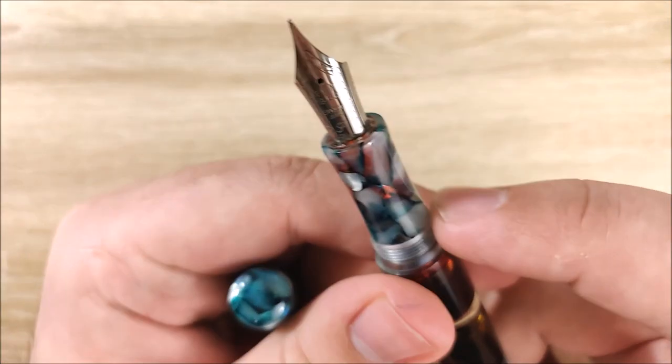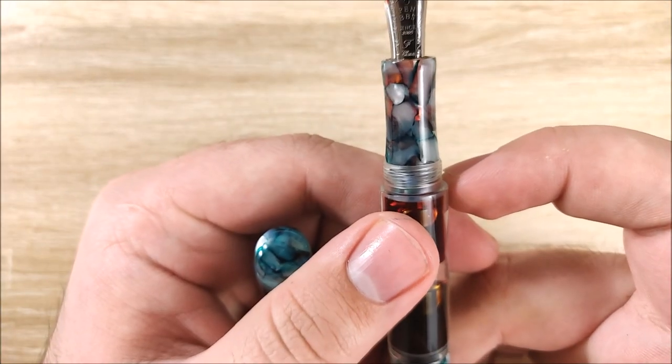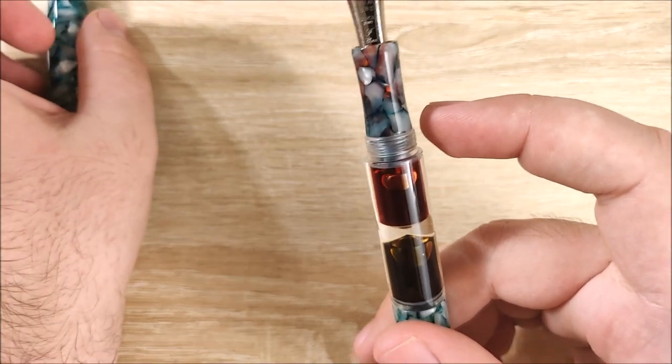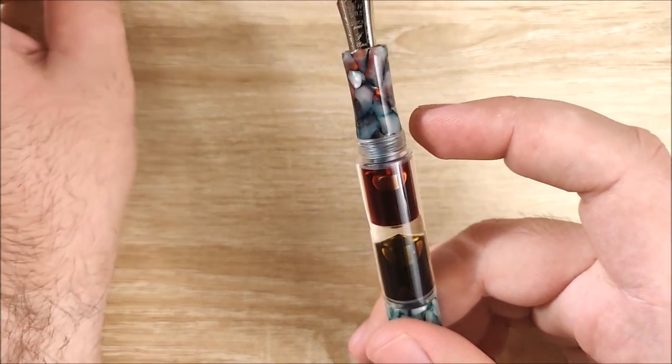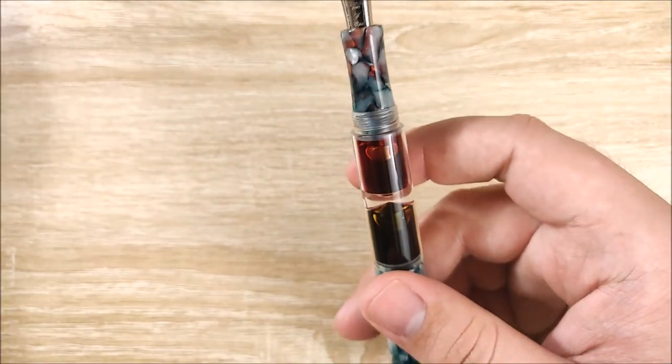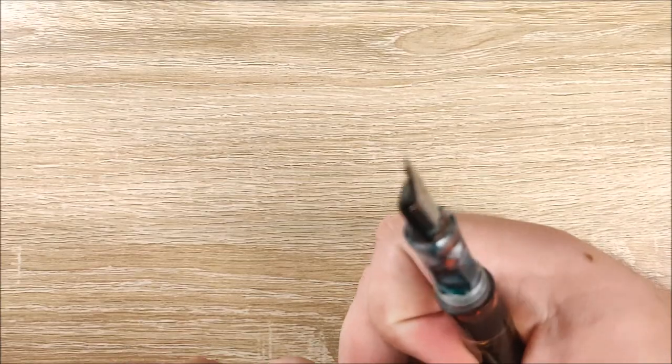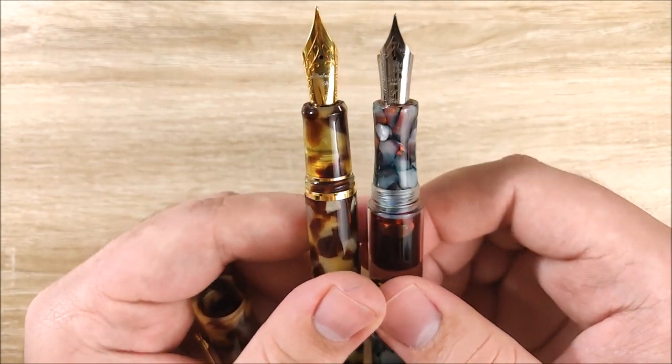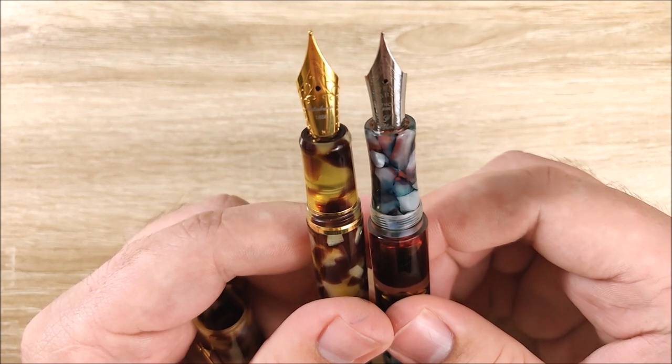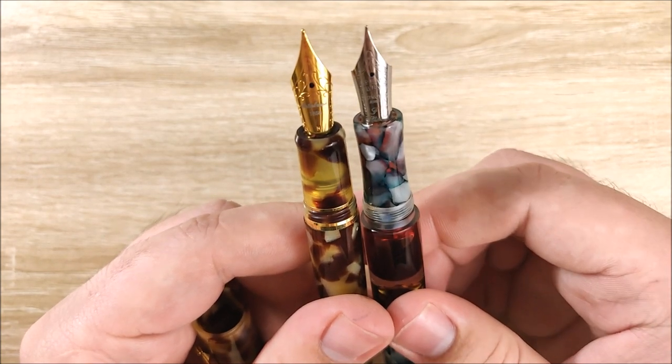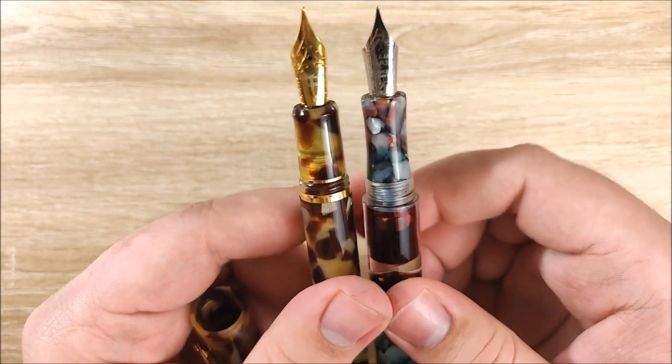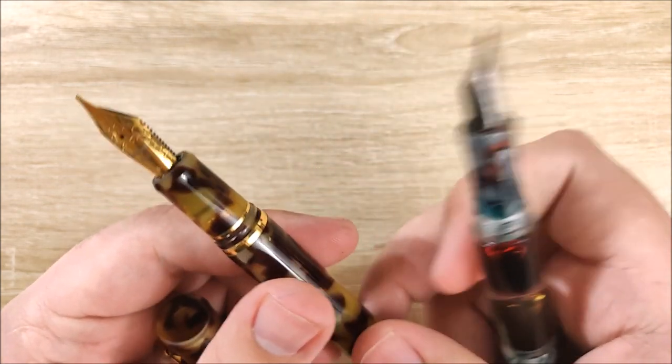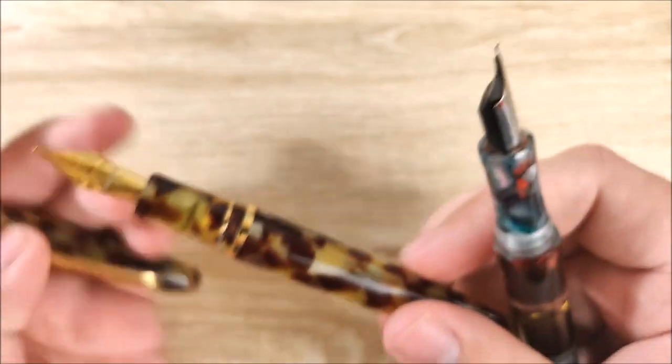Next thing in the neutral is the section. So you can see it does taper. Now the section's fairly small on this pen. Let me grab... So I have the Esterbrook SJ here, and you can see just how much thicker this section is on the SJ. In my opinion, it's much more comfortable to hold and use for long writing sessions just because this is a little too narrow. Now the Esterbrook SJ, the section's really not big. It's probably average.